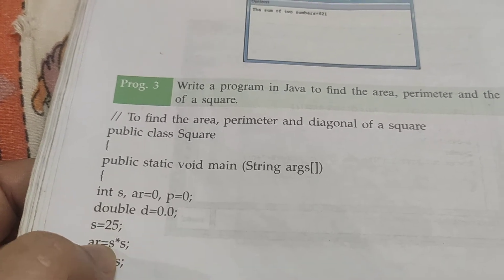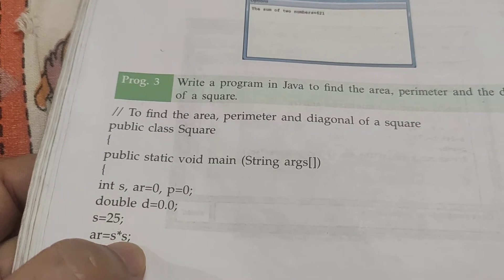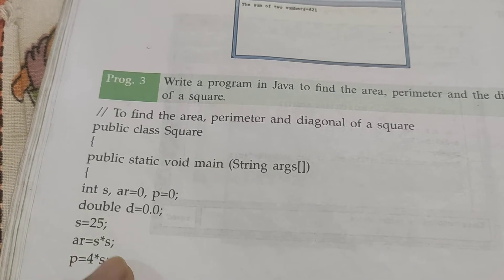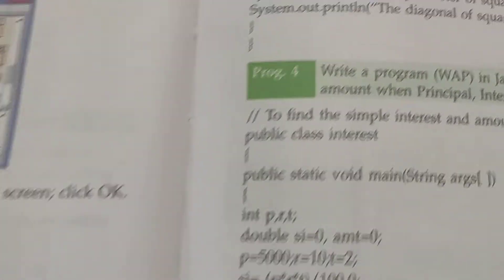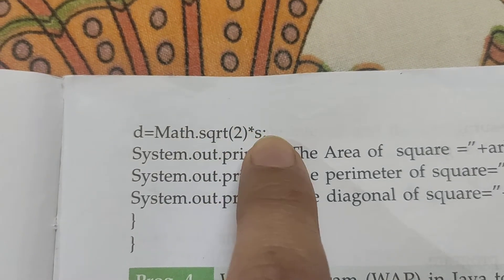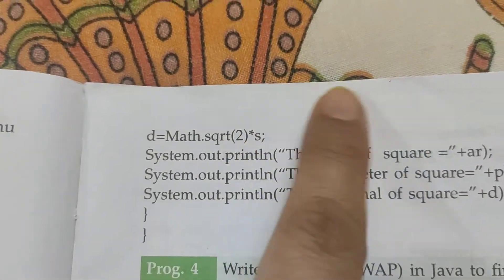Now area of square is side squared, s into s. Perimeter is 4 into side, which is 4 into 25. And diagonal has got Math.sqrt, which is 2 into s under square root, square root of 2 into side for the diagonal.